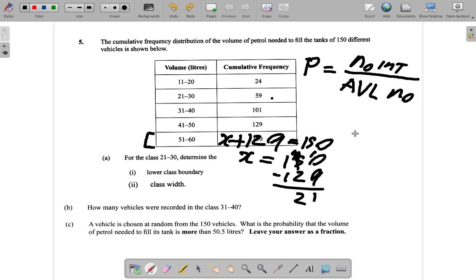The total number of vehicles available is 150. So, the number you're looking at, the number you're particularly interested in, that is the number with petrol 50.5 litres or more, is 21 over the total number of vehicles is 150.